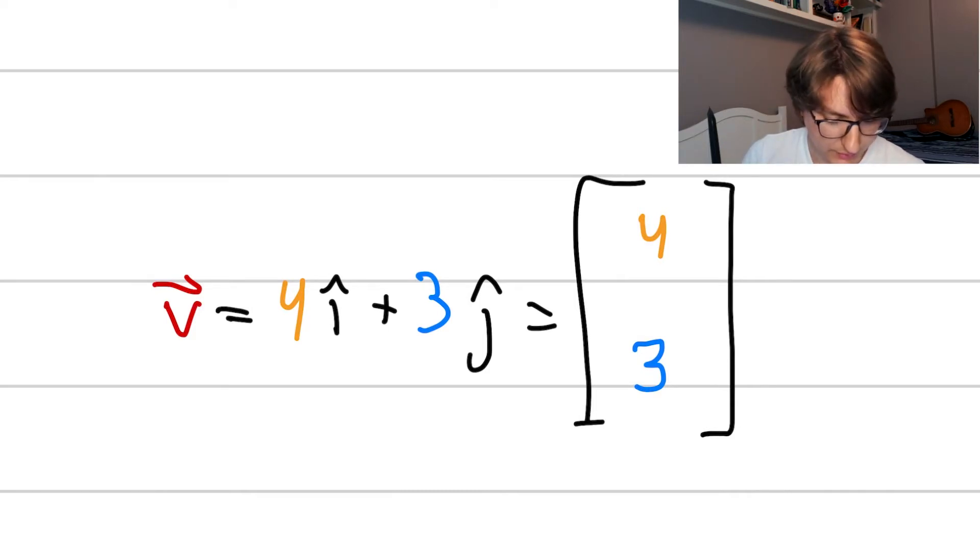Here we have the matrix form, typically written the x component first, then the y component. And if you have more components going down, say, in a z direction or some other direction, you continually write them down. Just another way of representing the same bits of information.